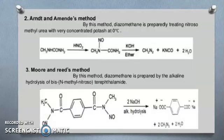Arnt and Amines method. By this method you can also prepare diazomethane. Diazomethane is prepared by treating nitrosomethylene urea with very concentrated potash at 0 degrees Celsius.